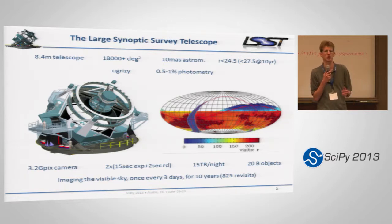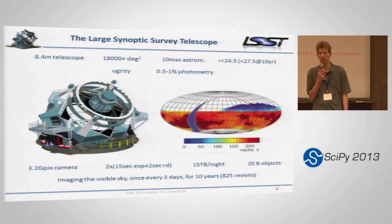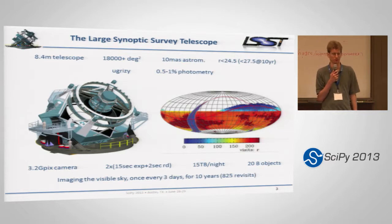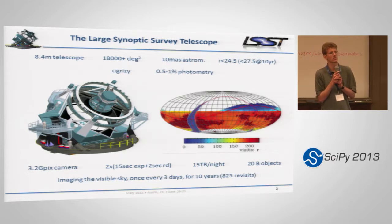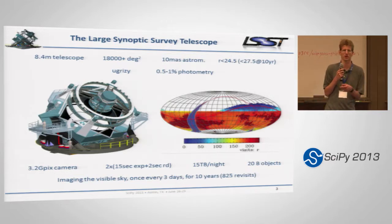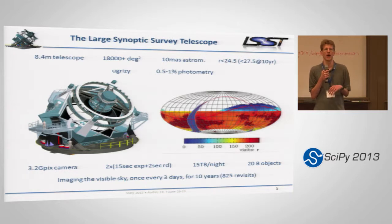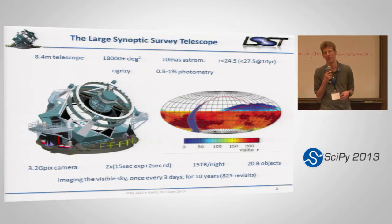That's about 15 terabytes a night and several petabytes by the end of the survey. This is scheduled to start in seven to eight years and will last for another ten years after that, but we're already well underway building it. Not only is this a lot more data, we're also required to do a lot more with it. The end product of the LSST pipelines are the catalogs that come out, and we need to do measurements that increase our control of systematic errors to keep up with the decrease in statistical errors. Not only do we have to process more data, we have to process significantly better than we have done in the past.